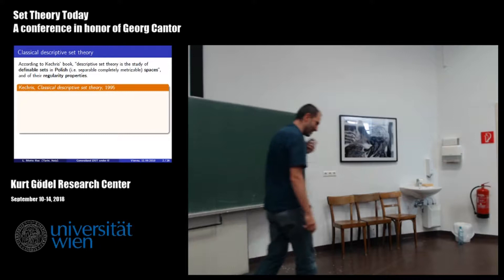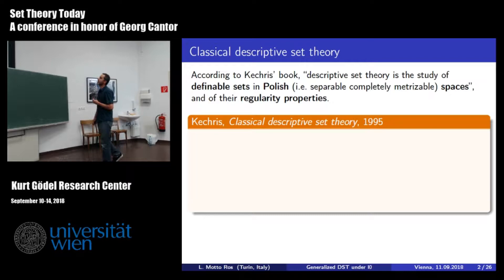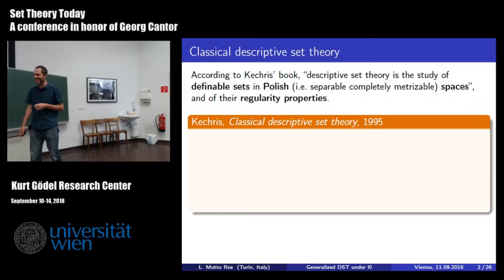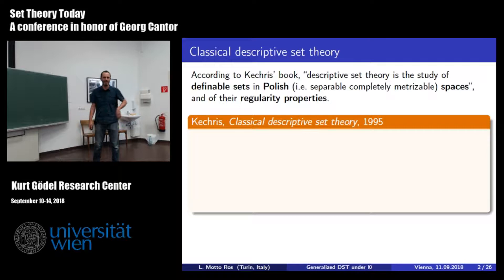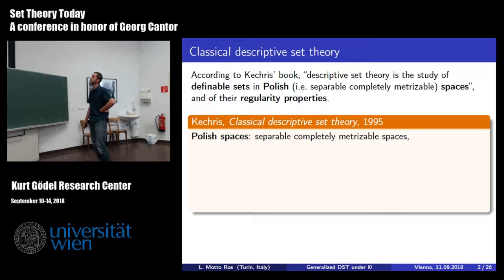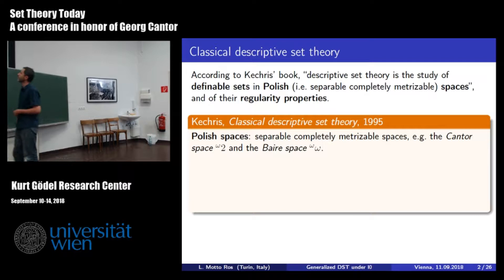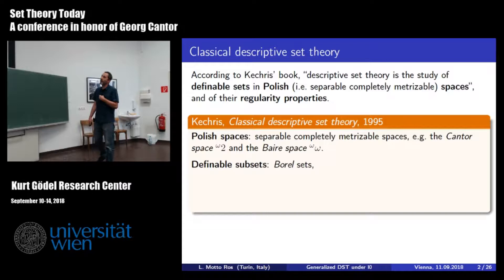According to the introduction of Kechris's book, which for me since I was a student is like the Bible for beginning the subject: descriptive set theory is the study of definable sets in Polish spaces. The objects here are Polish spaces, which are separable and completely metrizable spaces, like the real line, the complex numbers, but most notably for set theory, the Cantor space and the Baire space.